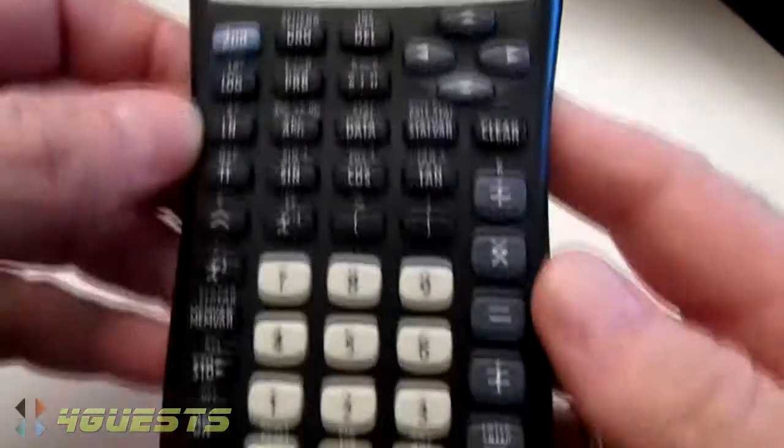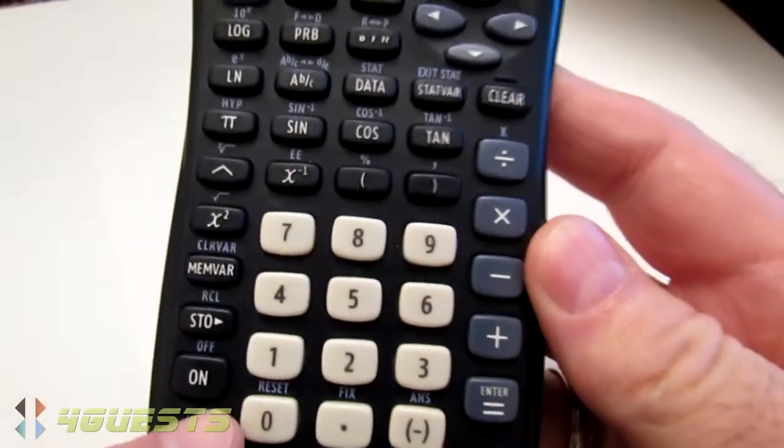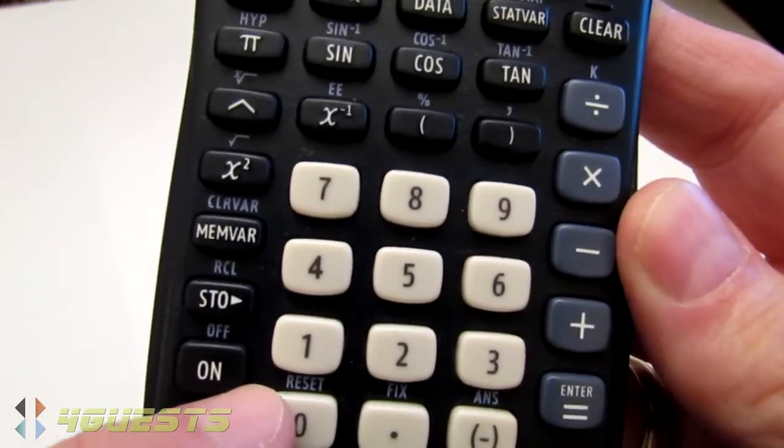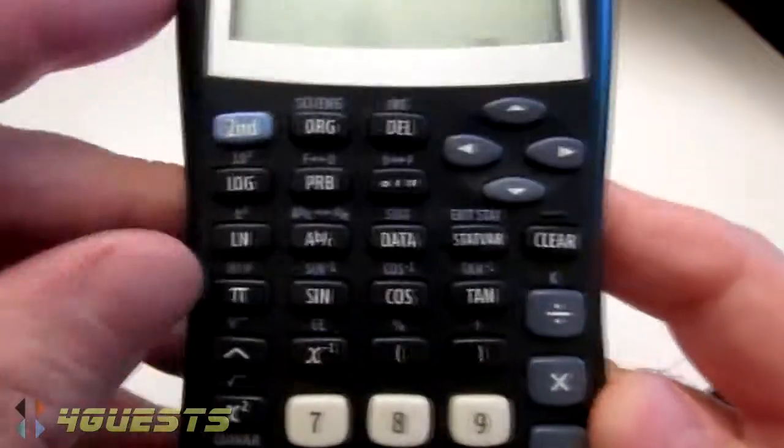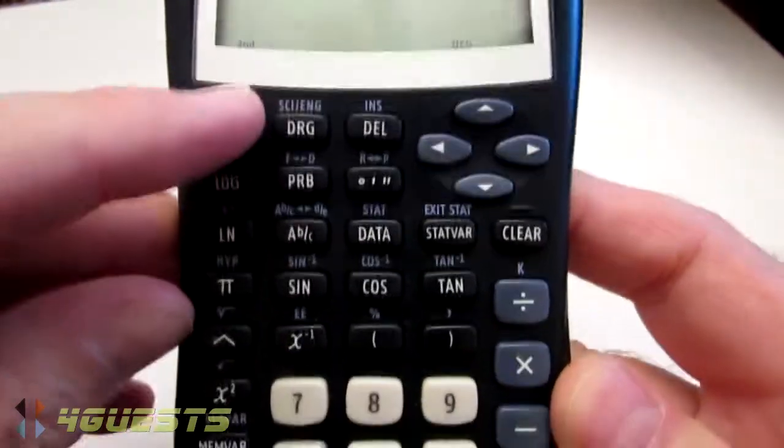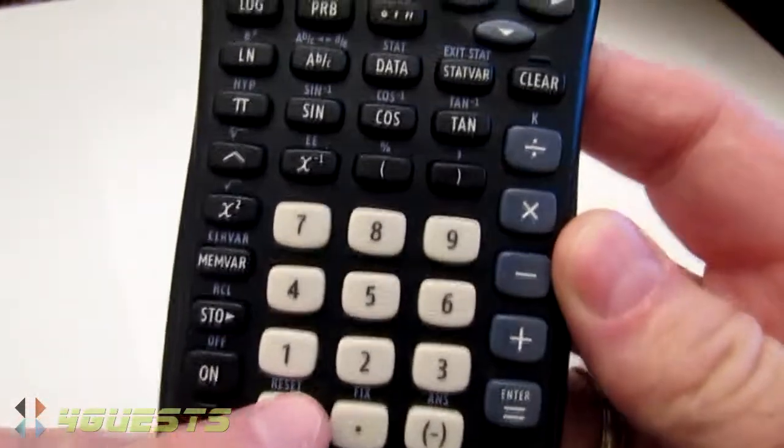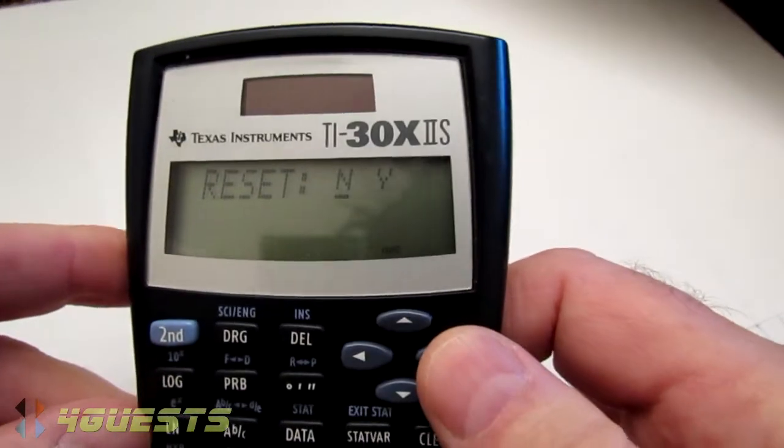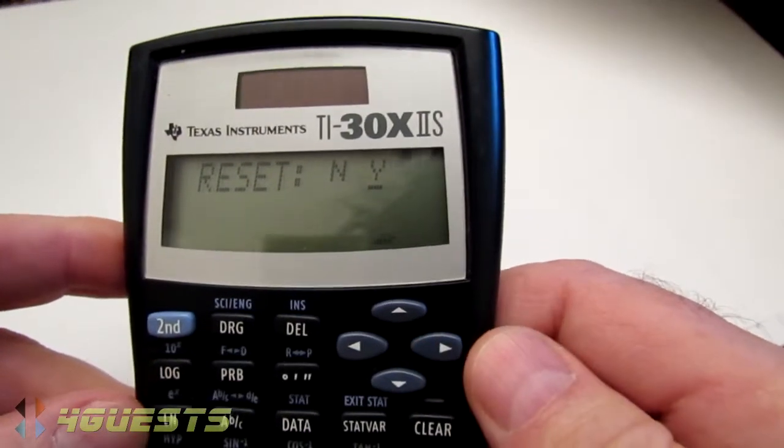And you would use this reset—the second line over zero right there. You press the second button followed by reset, and we want to reset yes. We use the arrow to go over to Y...